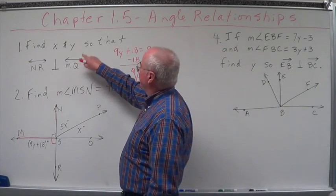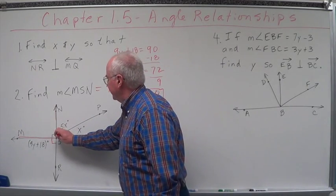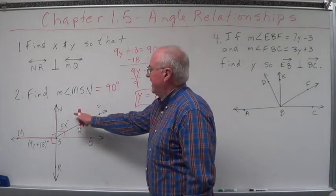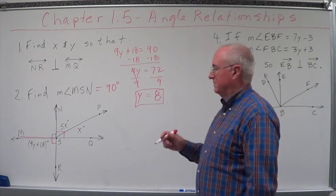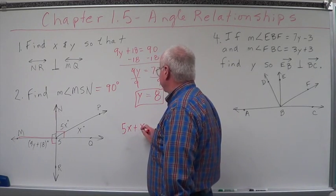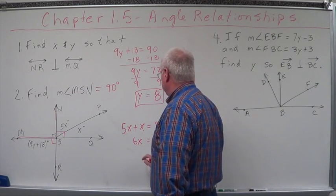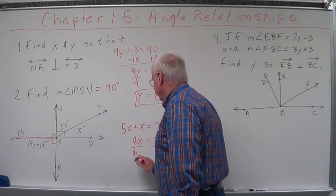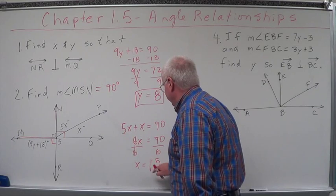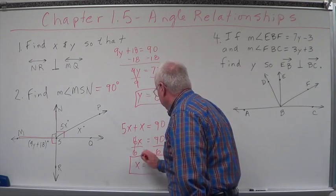Now we've got to find x. If this equals 90, that means this has to equal 90 right here. This is 5x and this is x. Add those two together — has to be 90 degrees. So we come up with 5x plus x equals 90. So 6x equals 90, divided by 6. x equals 15.